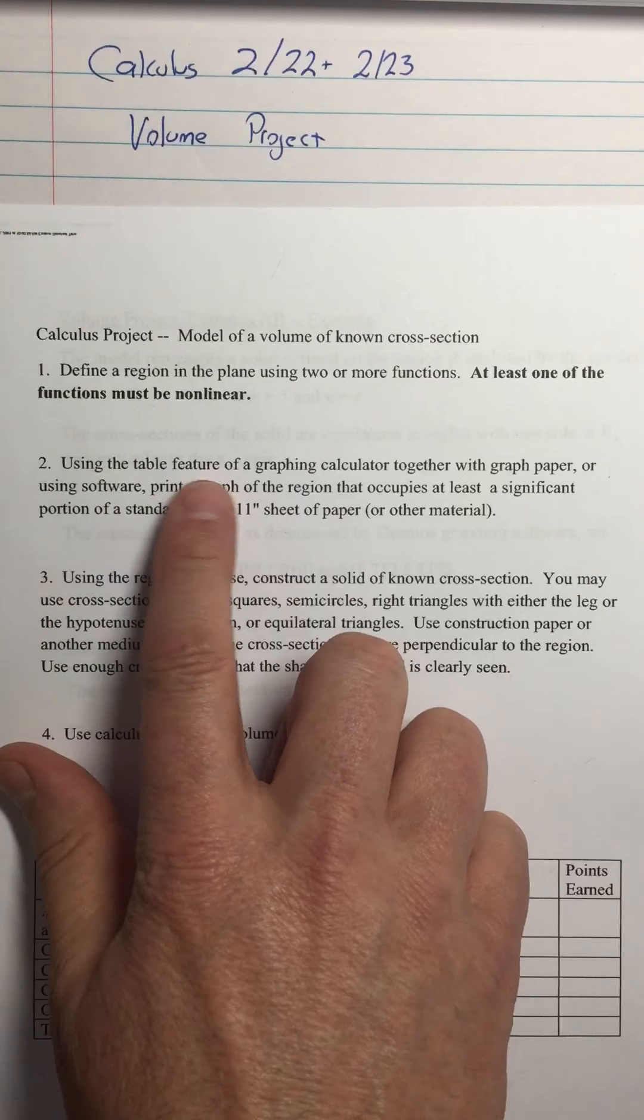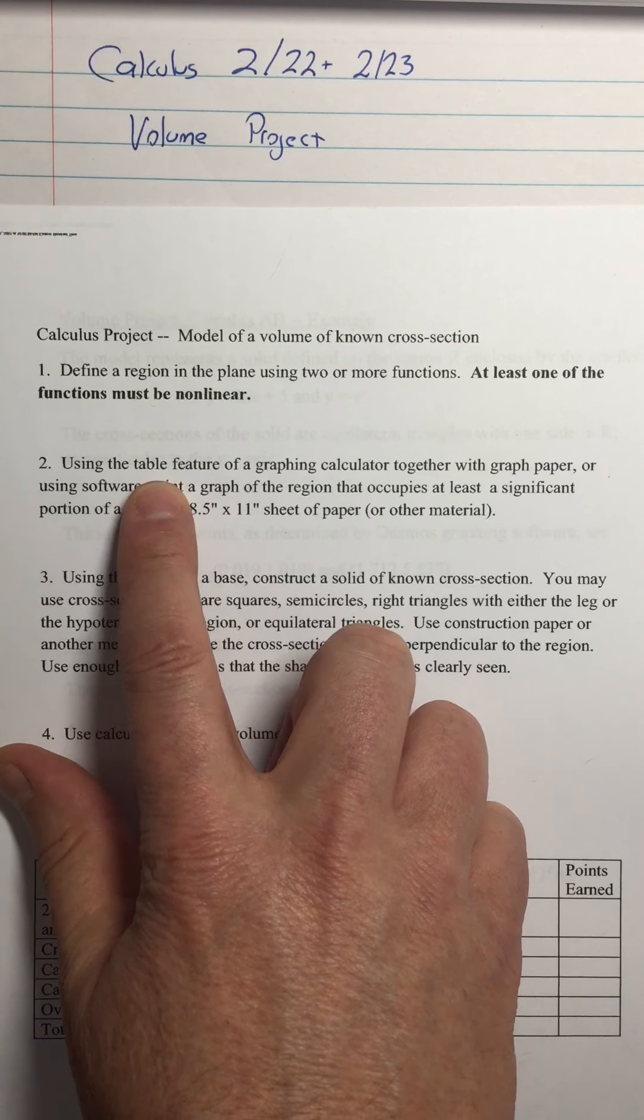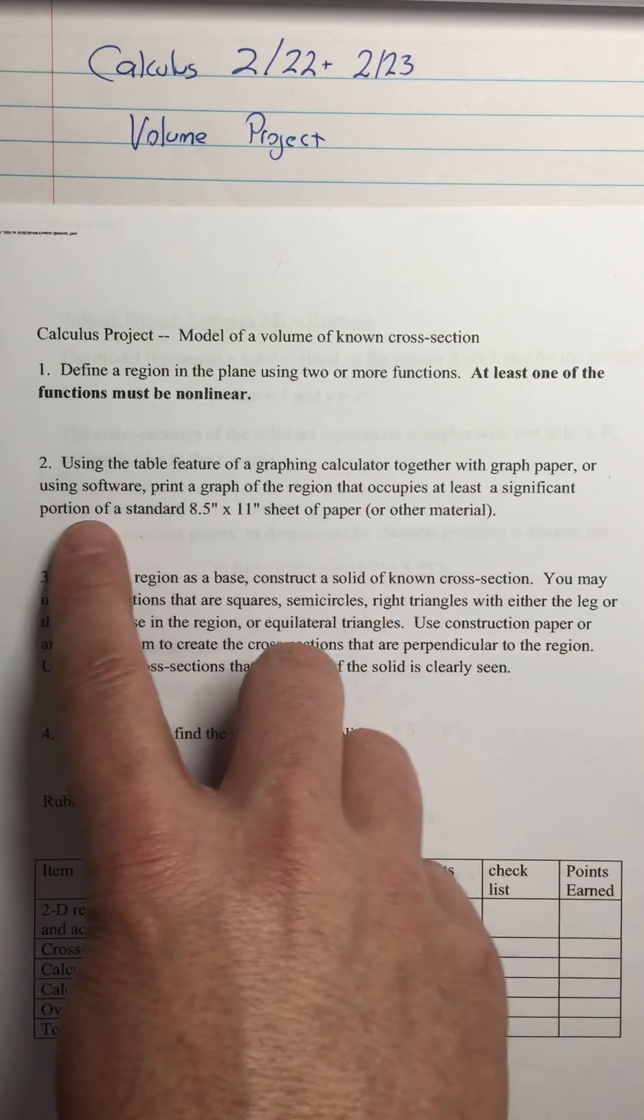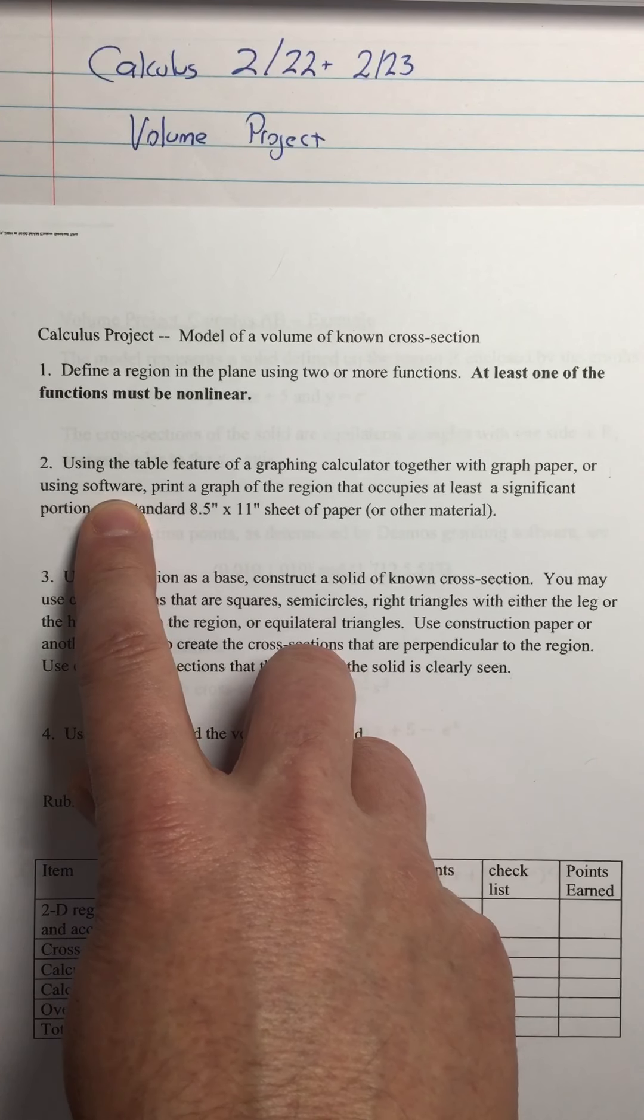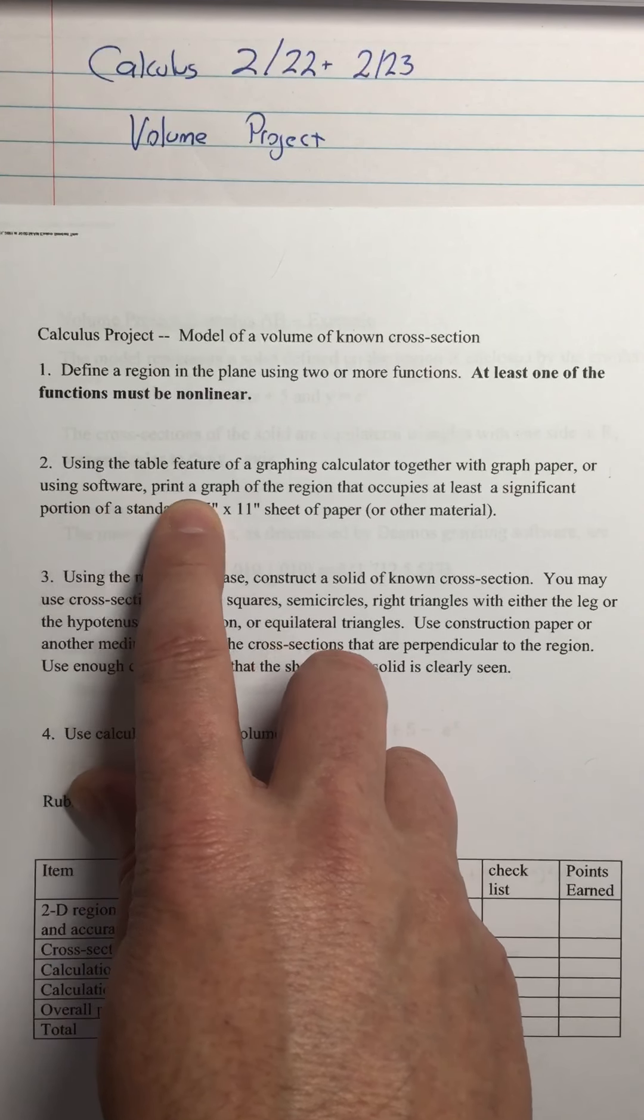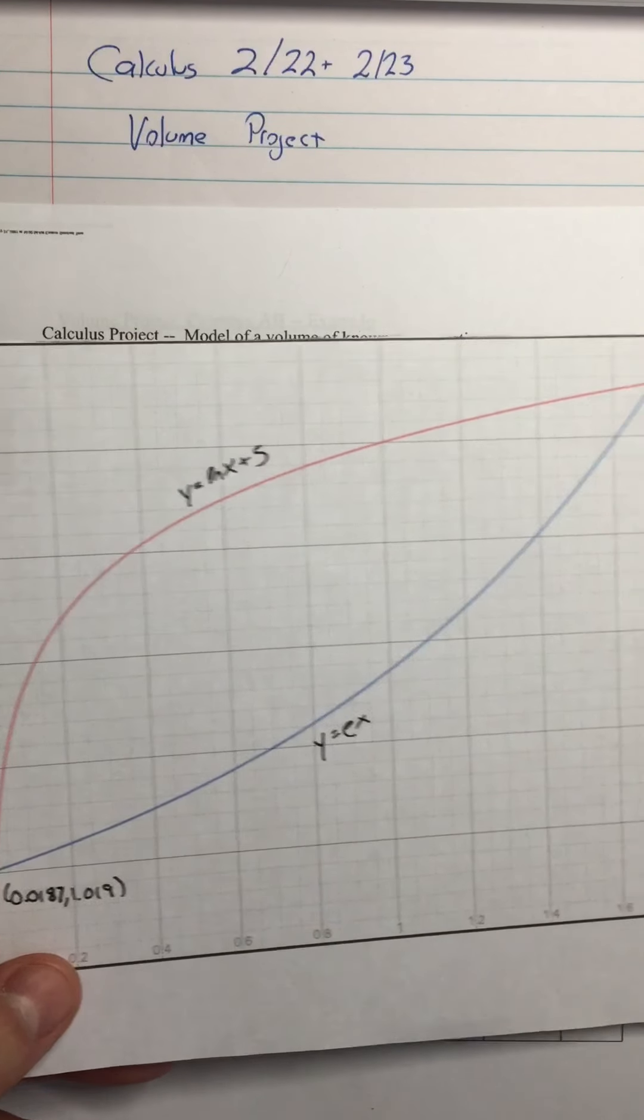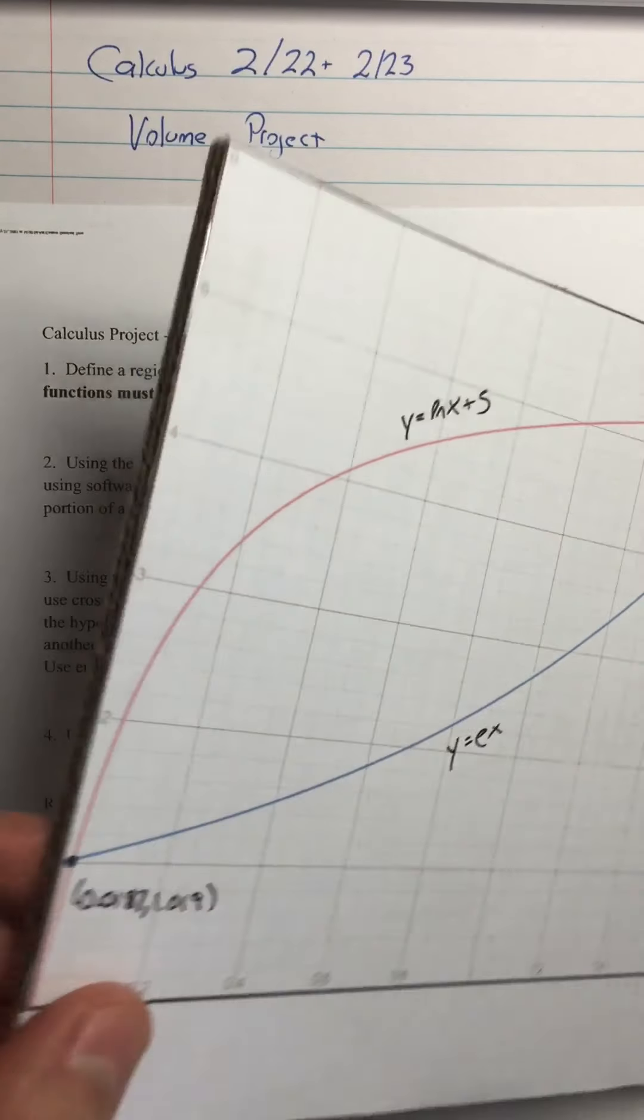You'll use the table feature of a graphing calculator with graph paper or using software. I highly recommend if you can print a graph using Desmos, that's the best thing to do. Here's a printed graph of the functions that I'm going to use for an example.